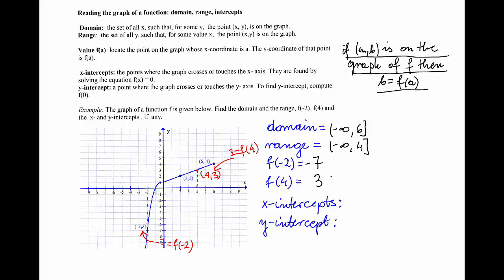Now, as for x-intercepts or y-intercepts, these are the points where the graph crosses either the x-axis or the y-axis. If the graph crosses the x-axis here, this point is my x-intercept and it is the only one.